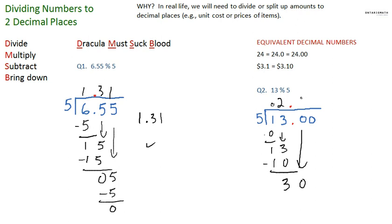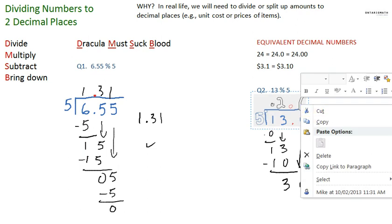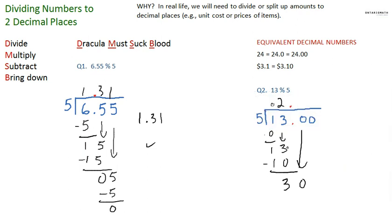5 goes into 30, 6 times. That's a bad looking 6. Oh, what's going on here? Let's try that again. 5 goes into 30, 6 times. 6 times 5 is 30. Subtract. 0. Bring down the 0. 5 goes into 0, 0 times. 0 times 5 is 0. Running out of spot here. And the remainder is 0.